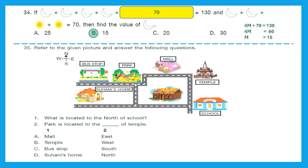Question 35: Refer to the given picture. Directions — north, south, west, east — are provided. What is located to the north of school? Find the school in the extreme right corner below. Looking north from the school, we have a temple. Temple is located to the north of school. Next: park is located to the dash of temple. We can see the park and the temple — from the temple, the park is in the west direction. So park is located to the west of temple. The right option is option B, which says 1 is temple and 2 is west.